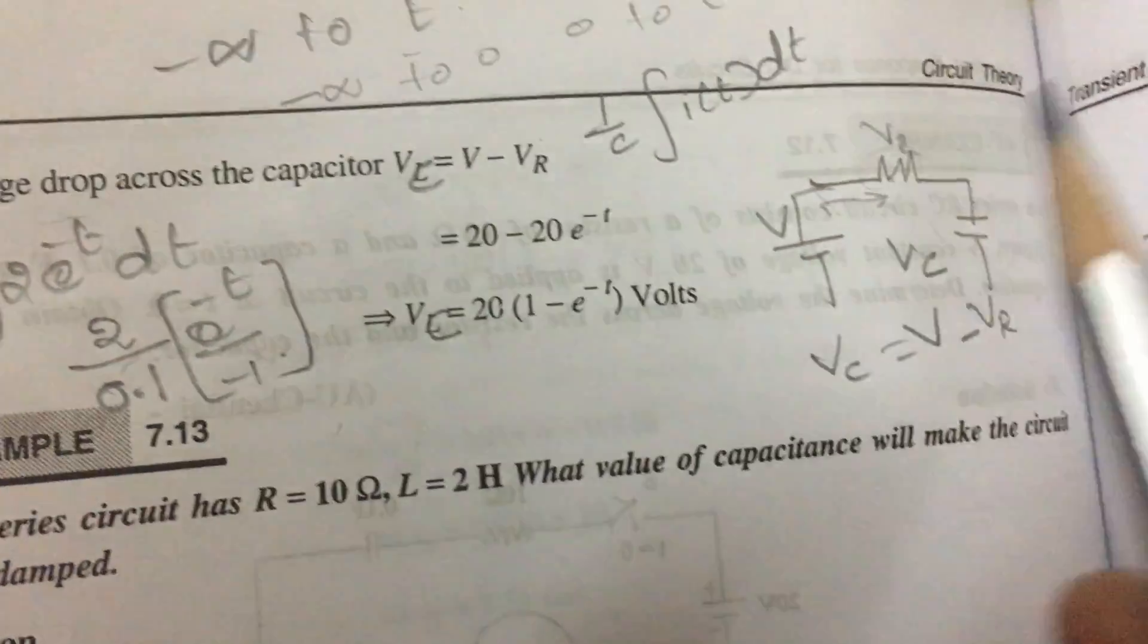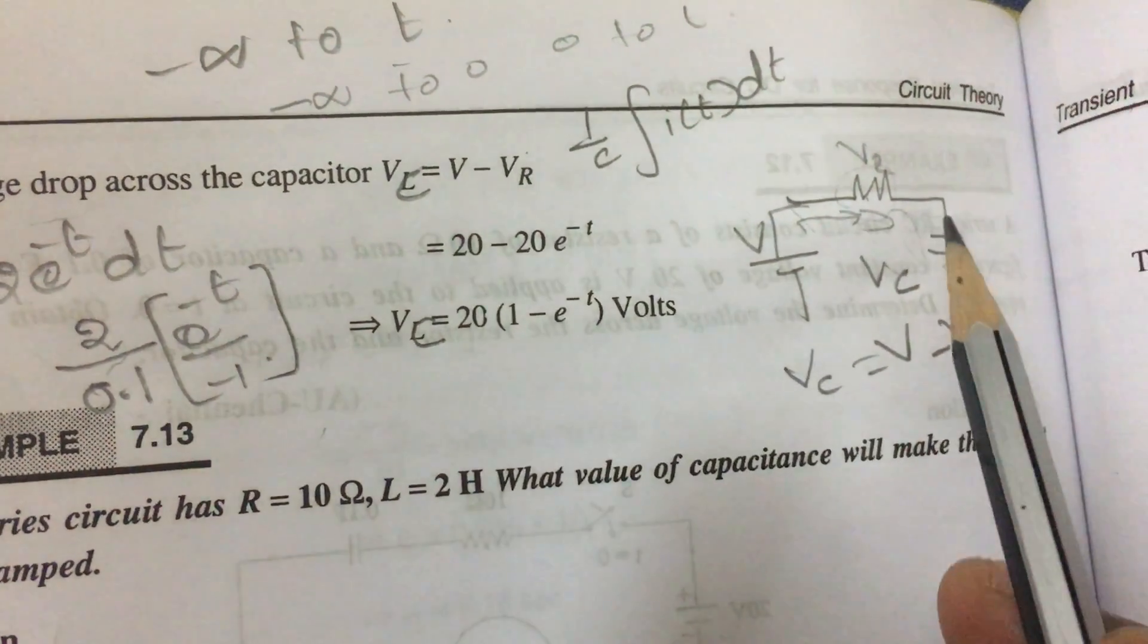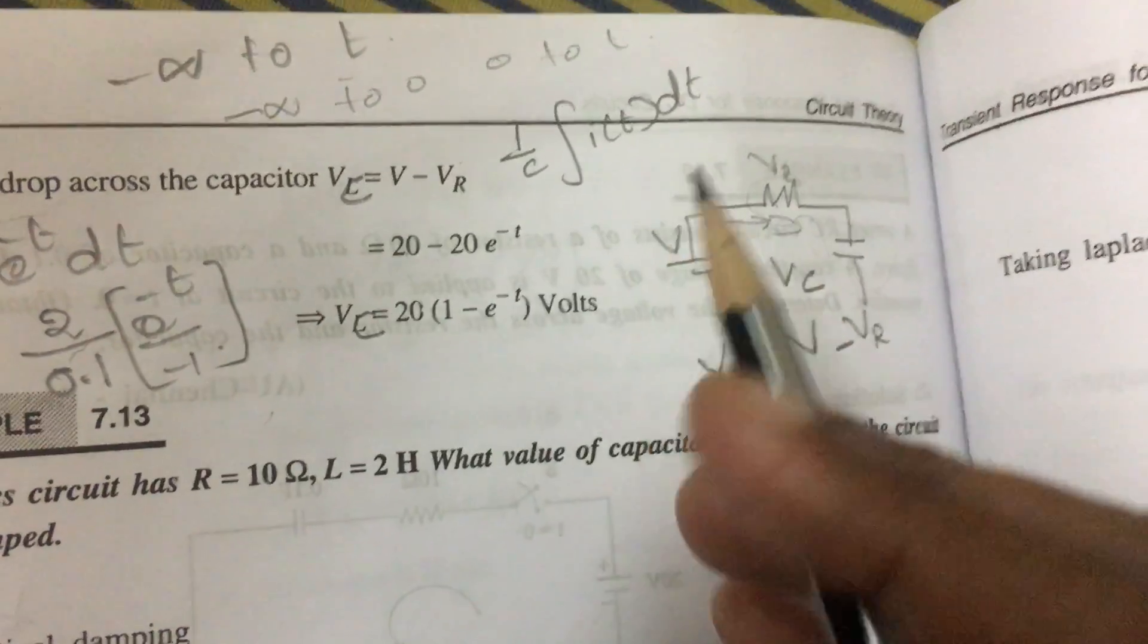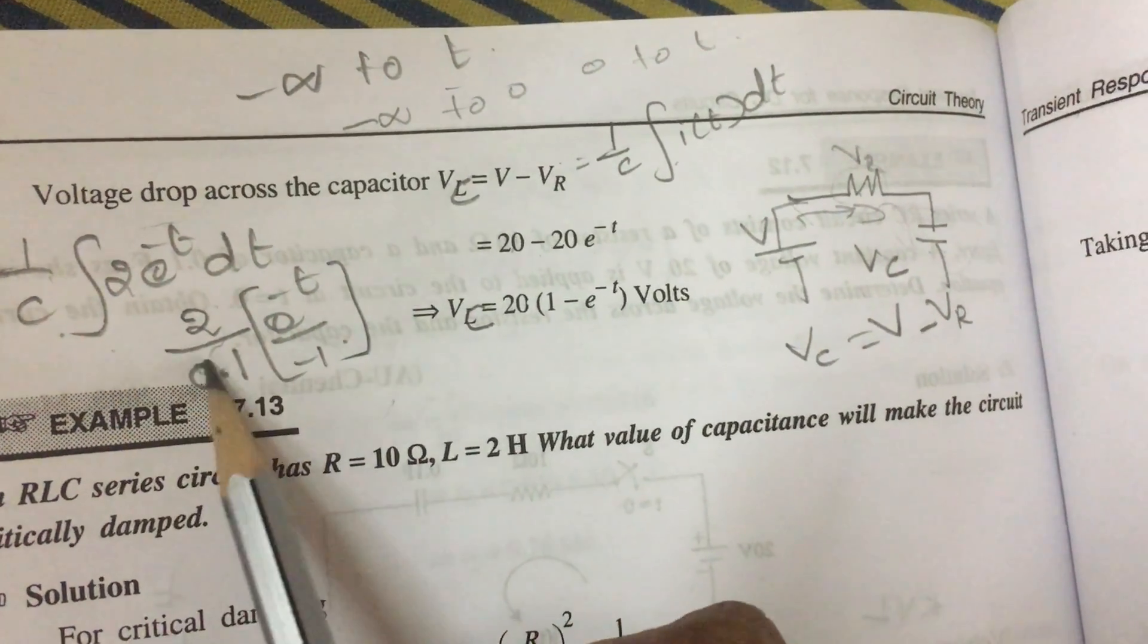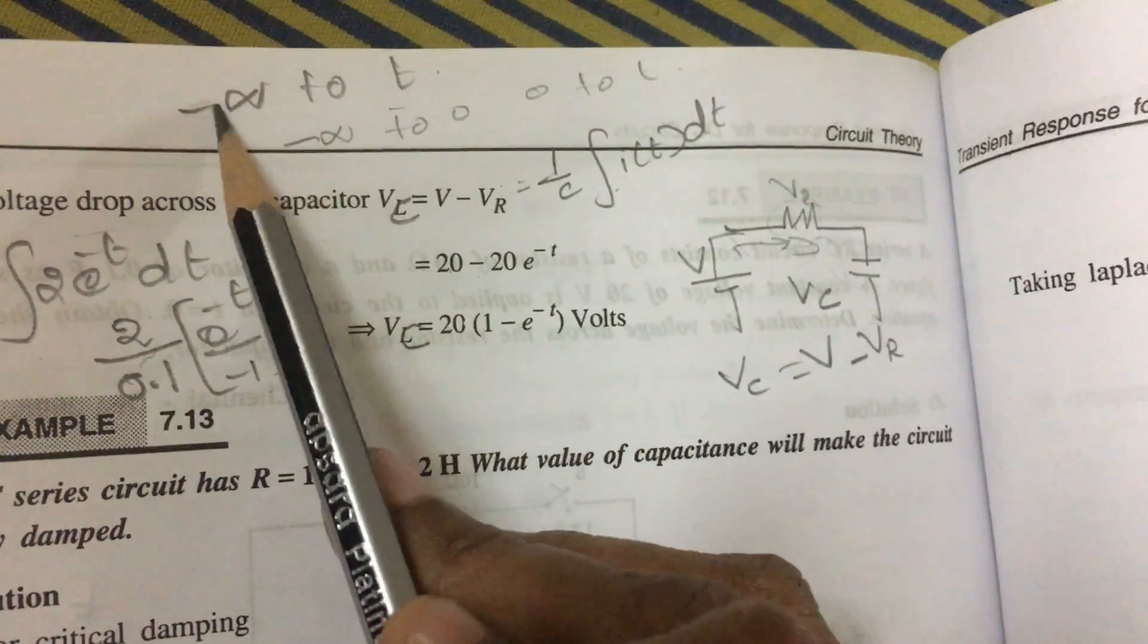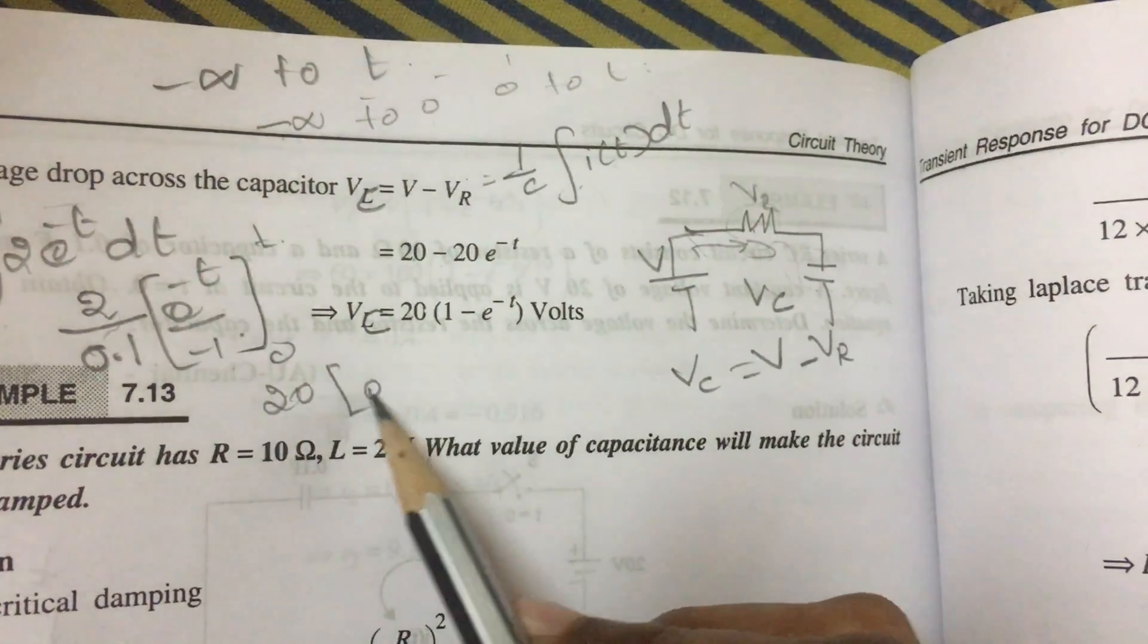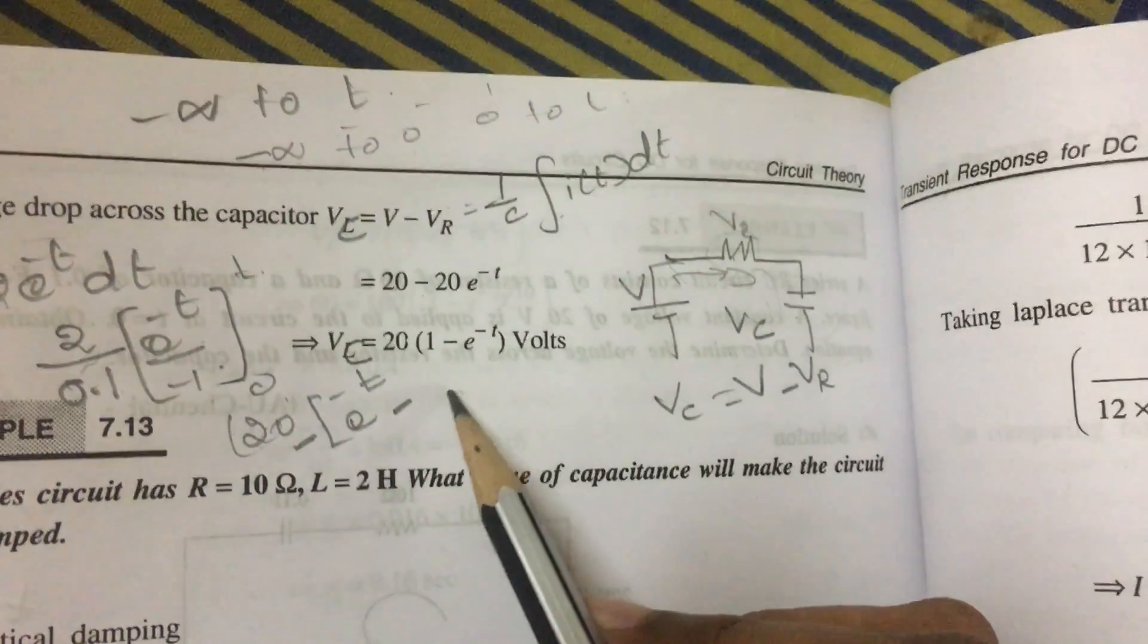Voltage across the capacitor: the initial voltage, some drops in the world, then some voltage drop will become here. How do you find the voltage across the capacitor? Total voltage minus voltage across the resistor, so 20 minus 20e power minus t. Otherwise, you can apply the formula 1 by C integral i(t) dt. That is 1 by C, the value is 2, take the constant outside, C is 0.1, integration of e power minus t is e power minus t divided by minus 1. The integration is from 0 to t. Apply the limit: 2 divided by 0.1 is 20, so e power minus t, take this minus outside, minus 20, upper limit minus lower limit.